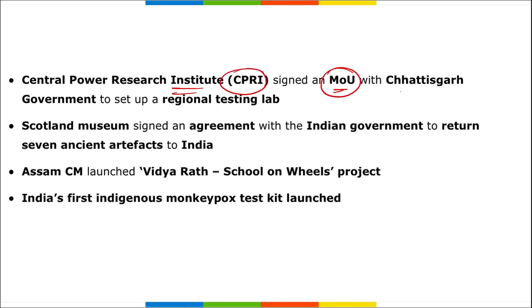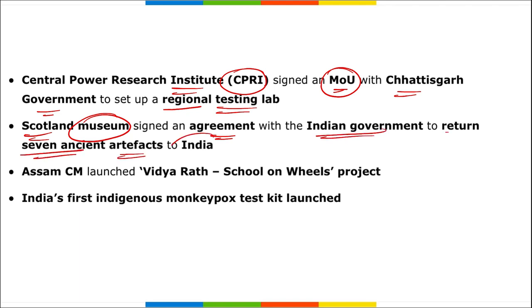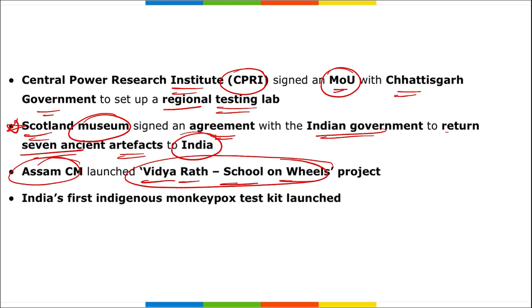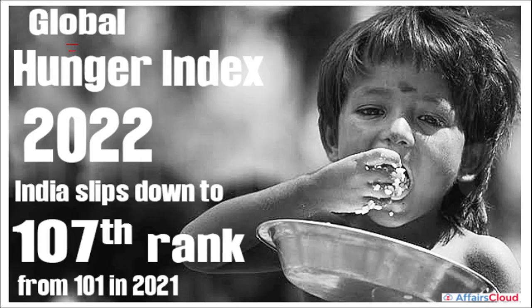Central Power Research Institute (CPRI) signed an MoU with the Chhattisgarh government to set up regional testing labs. Scotland Museum signed an agreement with the Indian government to return seven ancient artefacts to India. Assam Chief Minister launched the Vidyarathi School on Wheels project — questions may be asked about which state launched this.